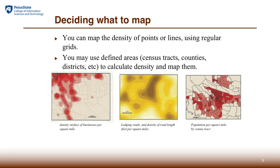One typical way to map density is to use regular grids. We divide the study area into regular rectangle grids and then calculate the density among those. If we have the number, count, or sum on each grid cell, we can consider those equivalent to density.